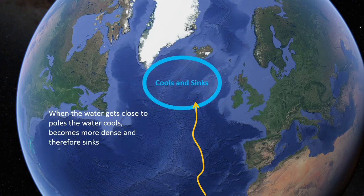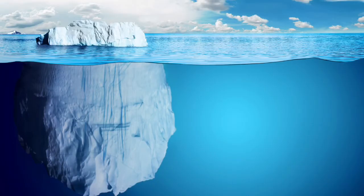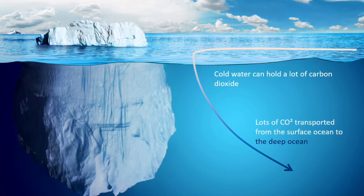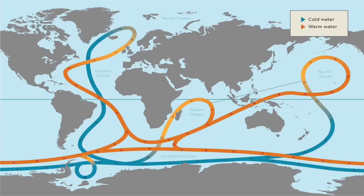This process is called downwelling, and it only happens in a couple of places on Earth — the North Atlantic between Greenland and Iceland is one such location. That surface current full of CO2 goes down into the deep ocean, because cold water can absorb a lot of CO2. This transports CO2 from the surface ocean to the deep ocean, and because there is not much movement in the deep ocean, molecules of carbon can be trapped there for centuries.